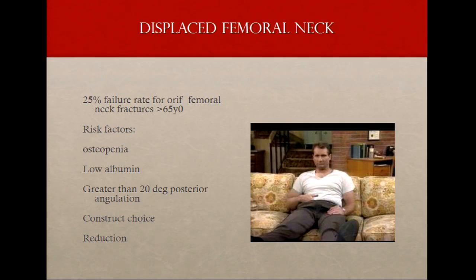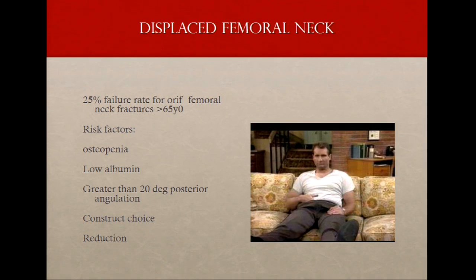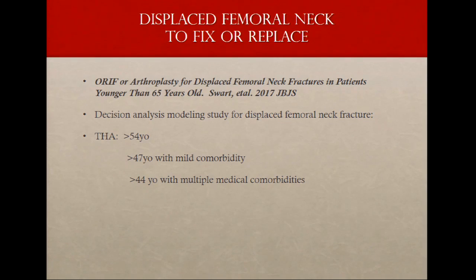This guy on the right isn't going to have any failures with his femoral necks — he just doesn't answer his call button. But new risk factors are coming out. The big independent risk factor is a preoperative low albumin. It's critical that we catch this and get them on a good nutrition program. Also, if you have an angulation greater than 20 degrees on your posterior view, that affects construct choice. An anatomic reduction has a much better chance of a successful result than any malrotation or off reduction.